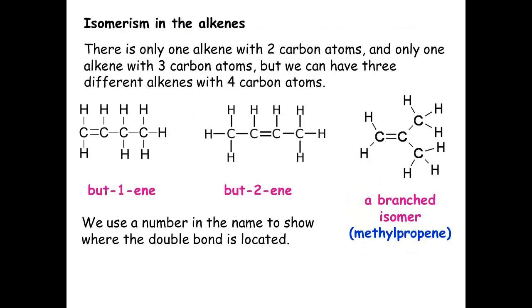Alkenes can also show isomerism. The first alkene having two carbon atoms only has one isomer. The one with three carbon atoms only has one isomer. However, once we get to four carbon atoms, we can see that there are three isomers, each with a double bond. The first two, the double bond is moved from the end to the middle. And the final branched isomer, we see that we have branching taking place.